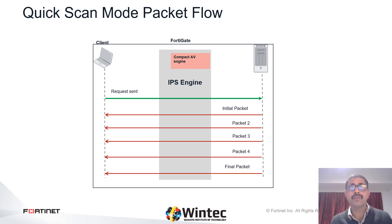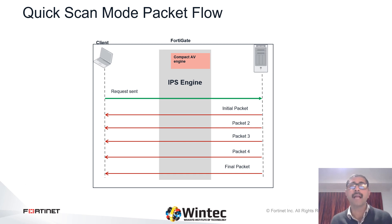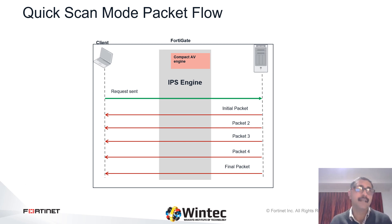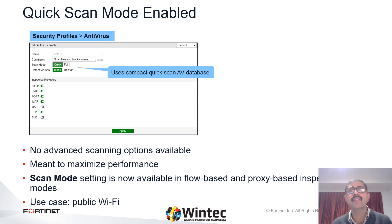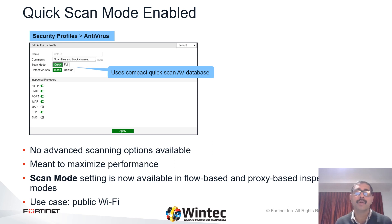Have a look at the diagrammatic representation of quick scan. You will immediately be able to see the difference between how quick scan works against full scan. The IPS engine examines the network traffic for viruses, worms, trojans, and malware without the need to buffer the file being checked. It provides better performance, but detection rate is obviously lesser. This slide shows an example of an antivirus profile operating in flow-based inspection mode with the scan mode set to quick. A good use case example would be quick mode scanning on public Wi-Fi. Note that all inspection options including FortiSandbox and mobile malware protections are not applicable in quick scan mode. It is also important to note that you must enable SSL-SSH deep inspection to scan encrypted traffic.